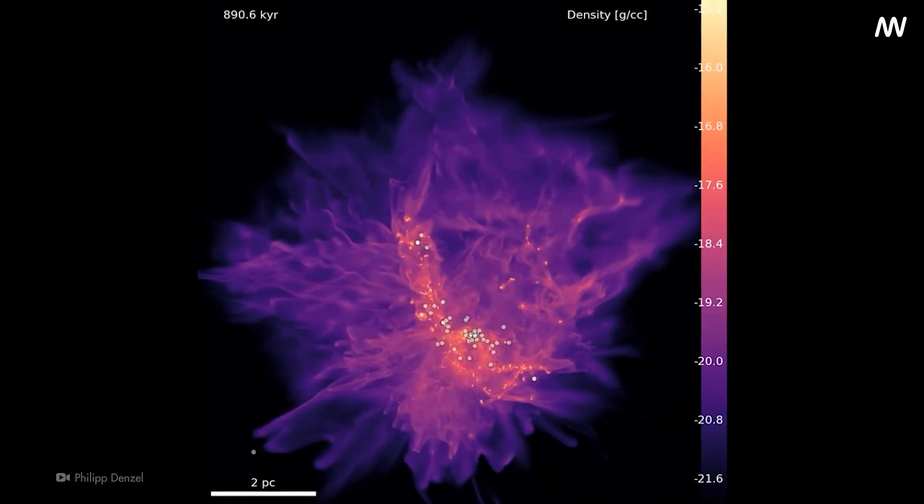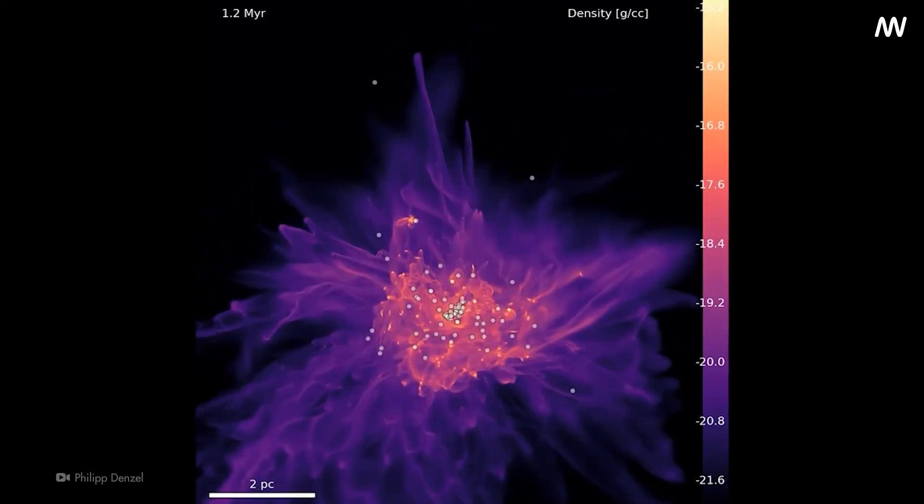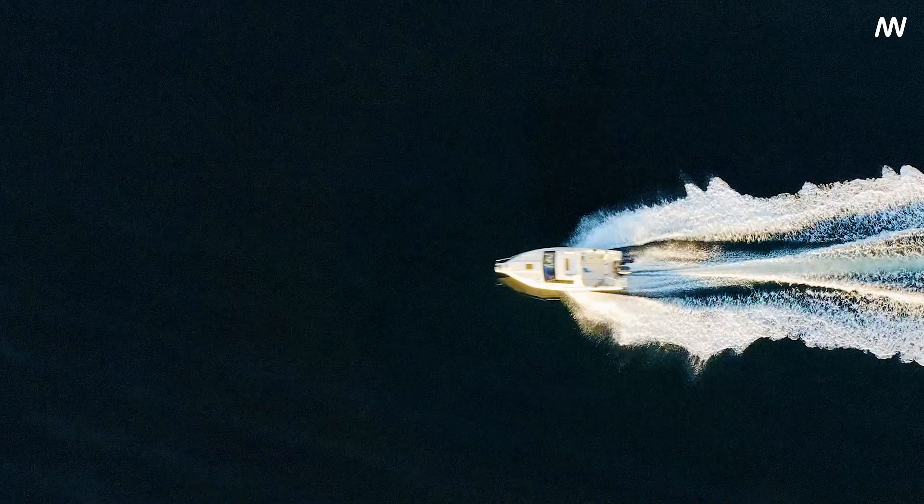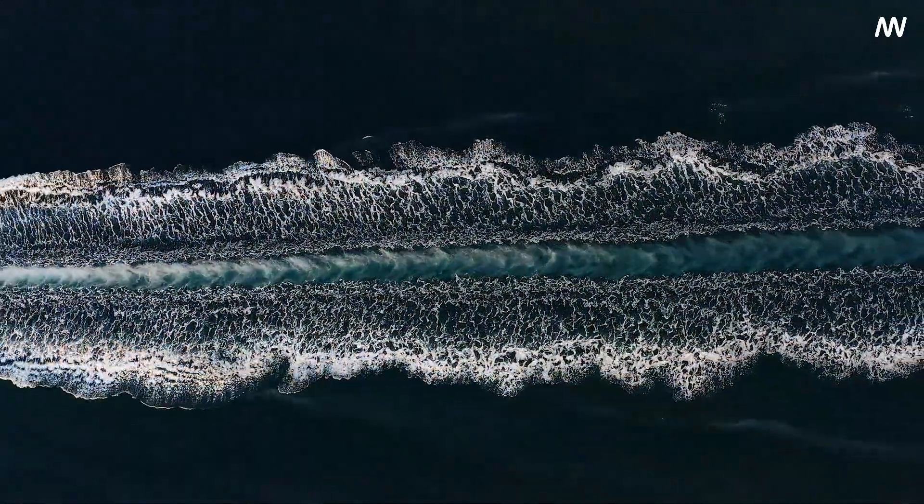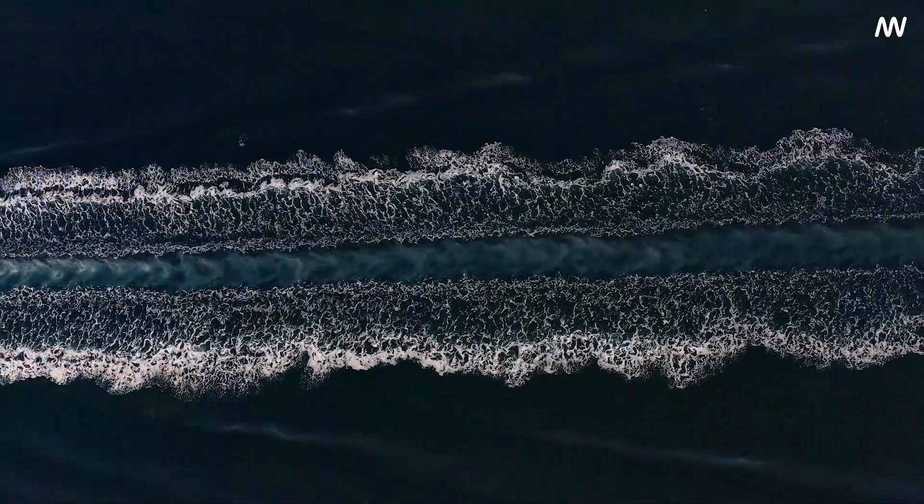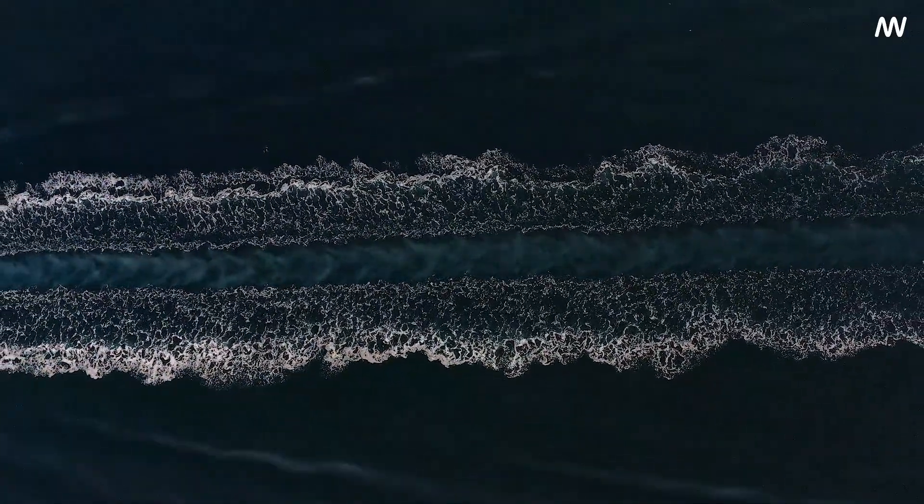These newly formed stars also contribute to the visible wake behind the supermassive black hole. So in essence, the wake of shocked gas and young stars is like the wake left behind by a boat moving through water, but on a much grander and more complex scale.